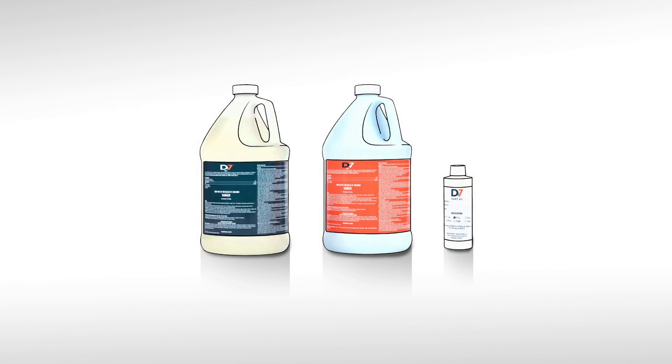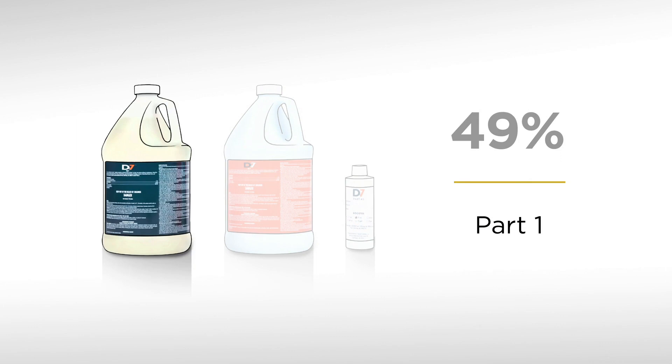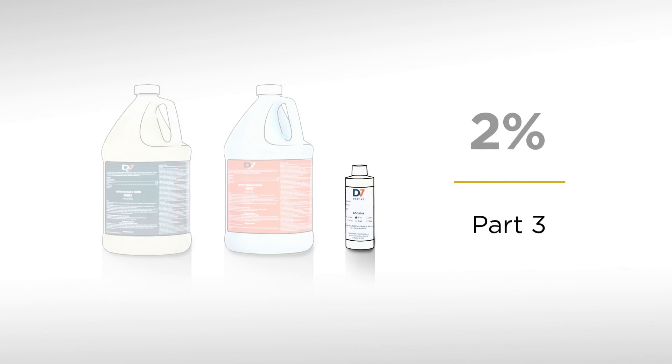This is the correct ratio of parts to mix your DCON7 solution: 49% Part 1, 49% Part 2, and 2% Part 3.